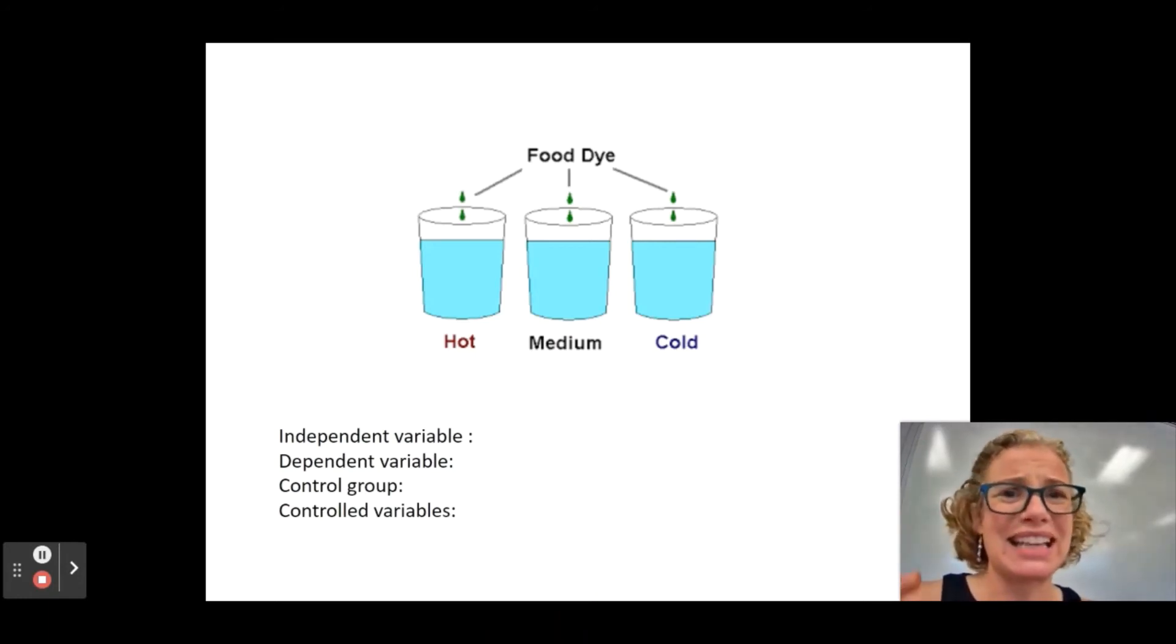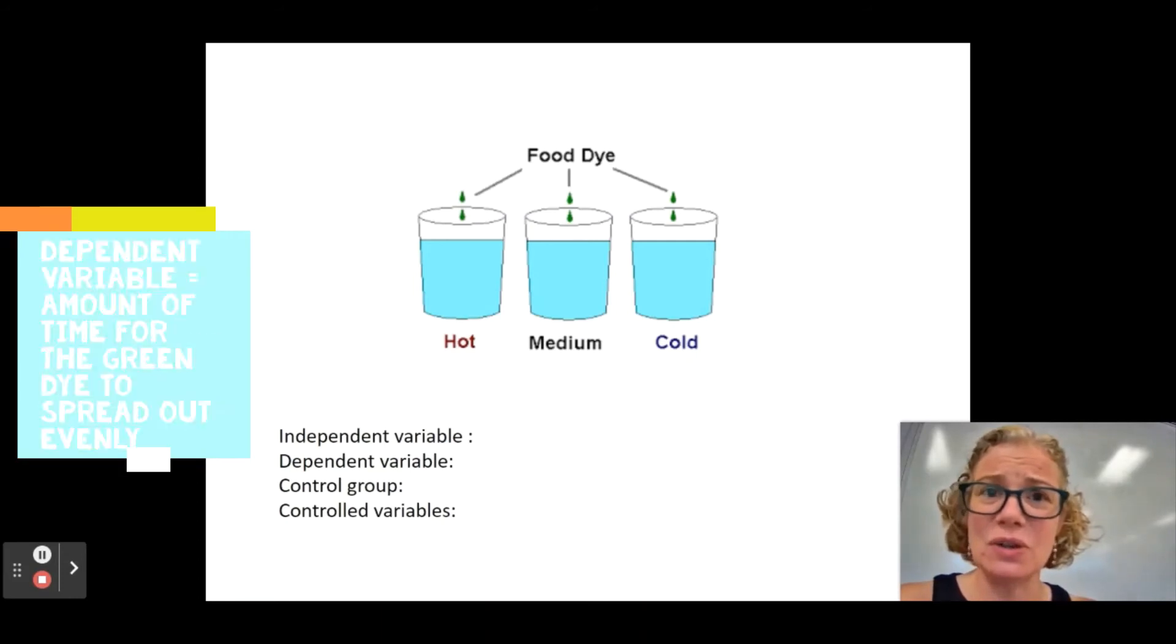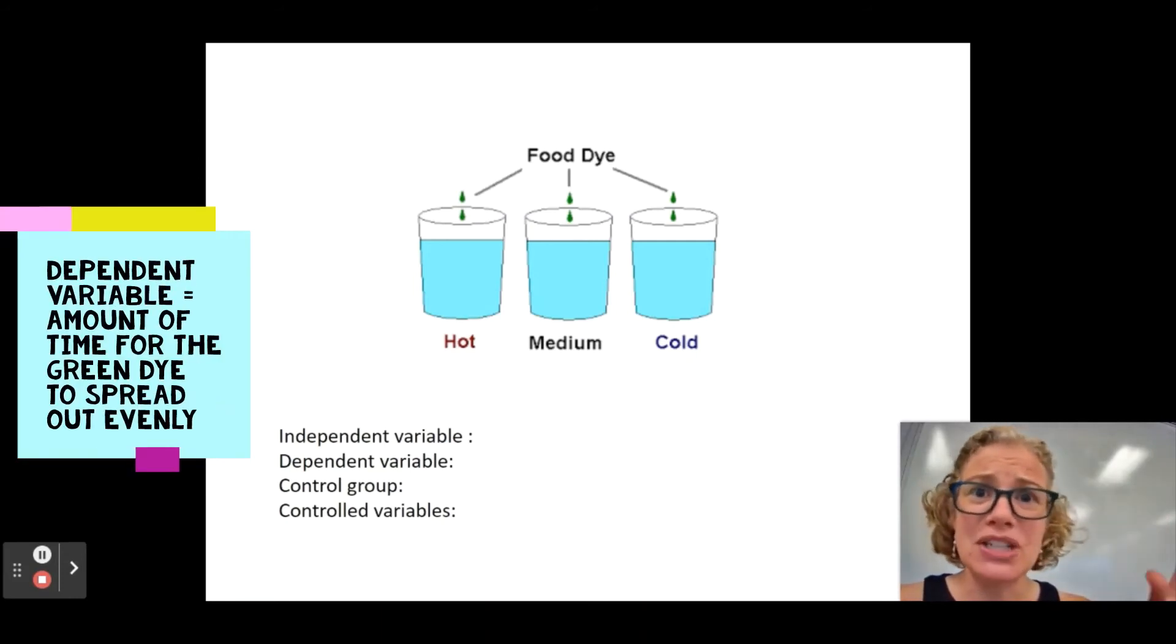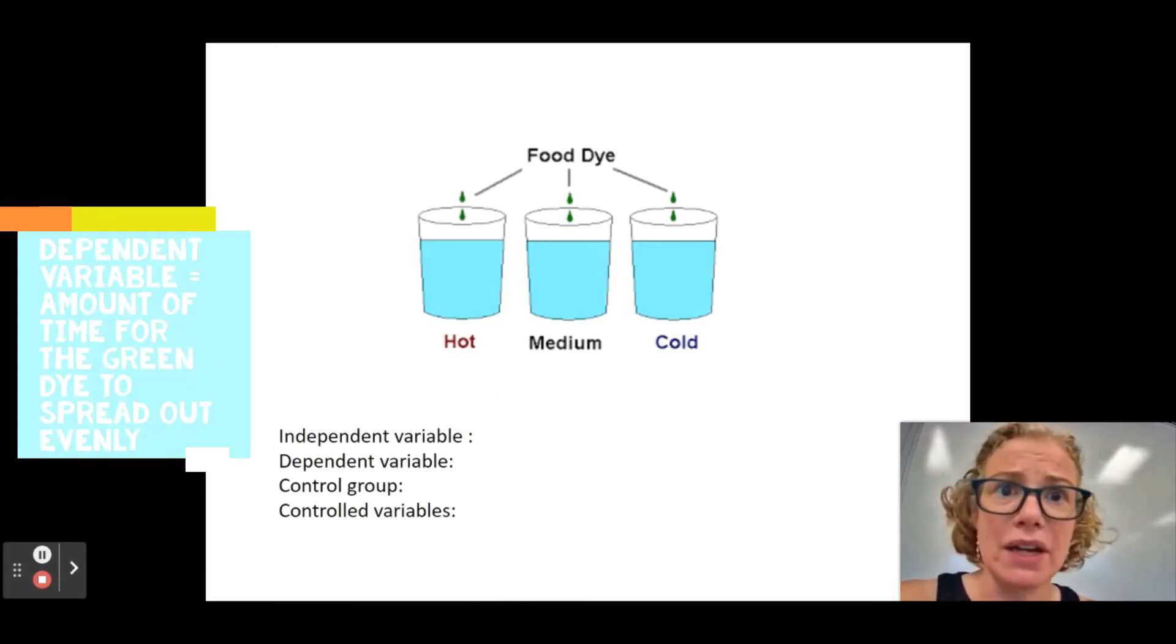But we recognize that, like, evenly is kind of vague. And so, like, someone's interpretation of when it's evenly spread out might be a little bit different than somebody else's. So, it's a dependent variable. Is it the best one? Hard for this experiment. Definitely.